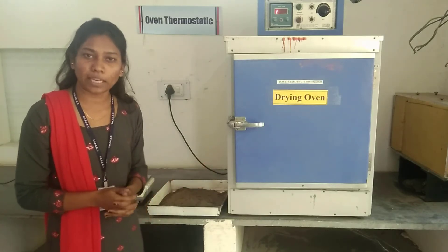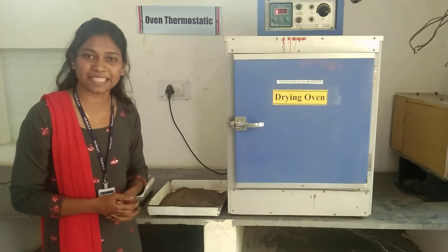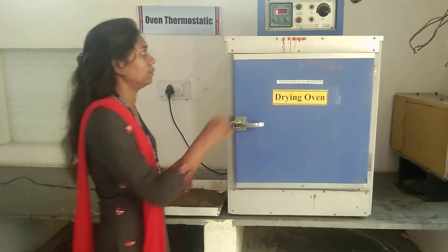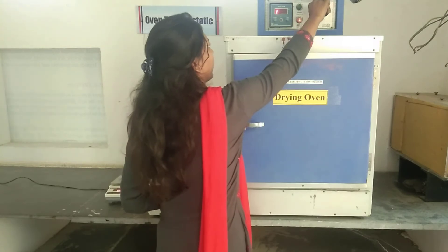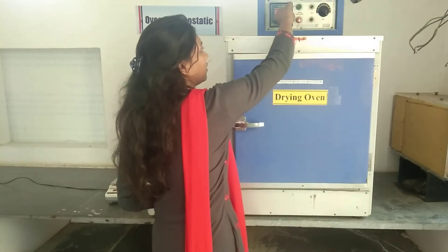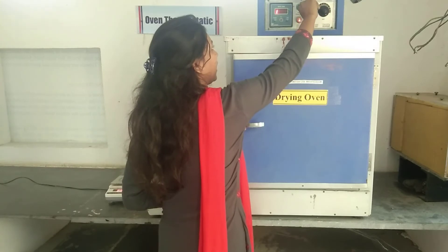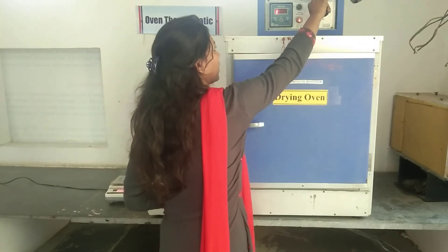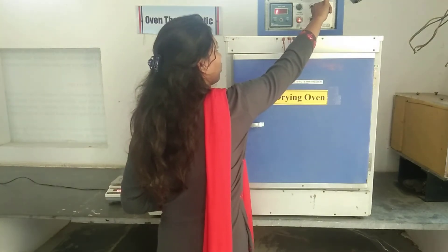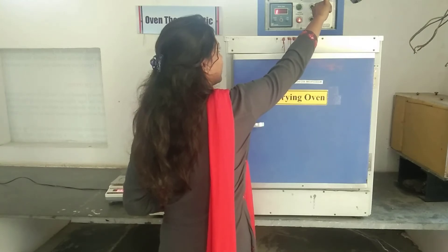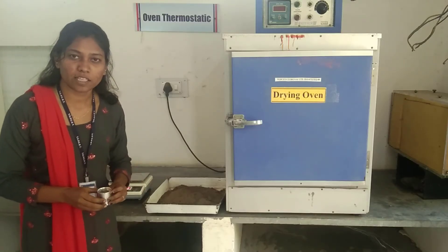For organic soil, we maintain the temperature at 60 to 80 degrees Celsius. Here, we select the fine aggregate and maintain the temperature at 110 degrees Celsius for 24 hours.